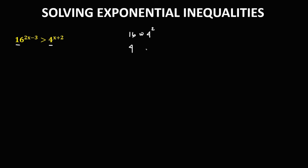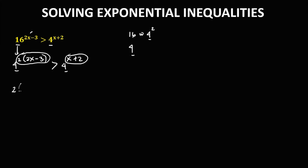We can rewrite 16 as 4 to the power of 2, then times the given exponent, times 2x minus 3, then greater than. Bring down 4 to the power of x plus 2. Since the equation now has the same base, we can equate these two exponents. So we have 2 times (2x minus 3) greater than x plus 2.